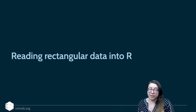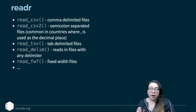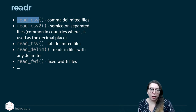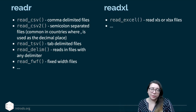Let's start with rectangular data. There are two packages we're going to use for reading rectangular data into R. ReadR, which comes with the tidyverse, and ReadExcel, which is a tidyverse-friendly package that allows you to read data files directly from an Excel file. ReadR comes with a list of functions that indicate what type of file you're reading from — for example, read_csv for comma-delimited files, read_csv2 for semicolon-separated files, and so on for tab, any delimiter, or fixed-width files. In ReadExcel, we'll use the function read_excel, which can read any type of Excel file with the extension xls or xlsx.